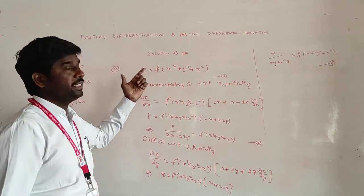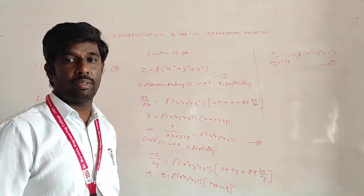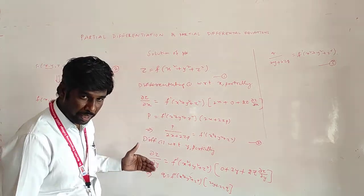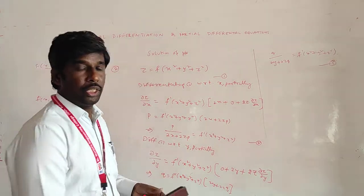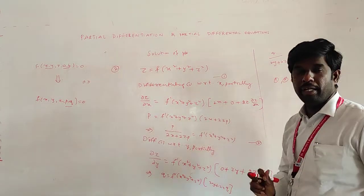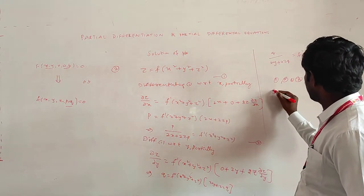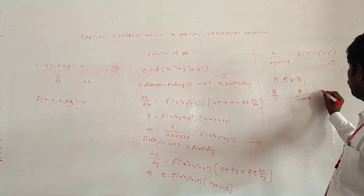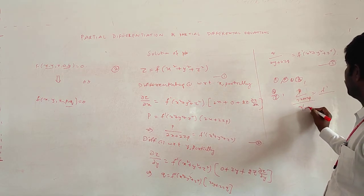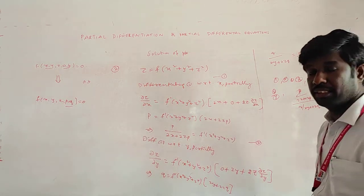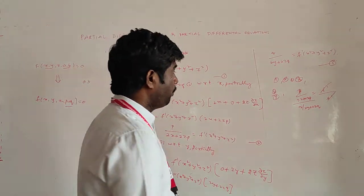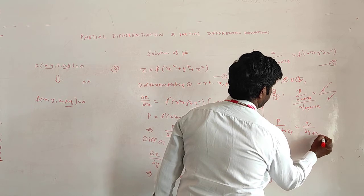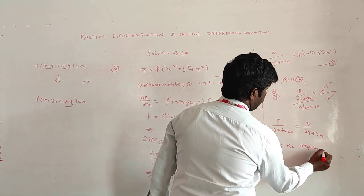Now, from equations 2 and 3, F' appears on the right-hand side of both. So dividing equation 2 by equation 3: P / (2x + 2zP) = Q / (2y + 2zQ). The F' terms cancel. By simplifying the right-hand side, we get the partial differential equation: P(2y + 2zQ) = Q(2x + 2zP). This is the required partial differential equation, eliminating the arbitrary function F.